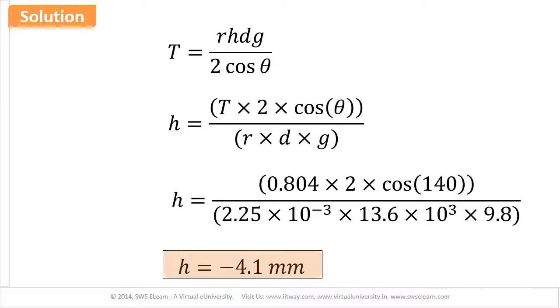Here the minus sign indicates that the level of the liquid, instead of rising, is actually decreasing. That shows the depression. Hence, in this case, the mercury is depressed by 4.1 mm.